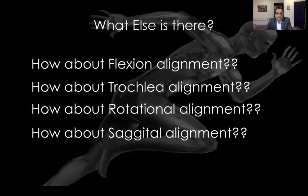So what else is there? We looked at CT scans and all other alignment parameters that affect outcomes in knee replacement. The key questions are: what is the alignment of the knee when flexed at 90 degrees? What happens to trochlear alignment? What happens to rotational alignment? And what about sagittal alignment? The last three — trochlear, rotational, and sagittal — appear to be very interrelated.